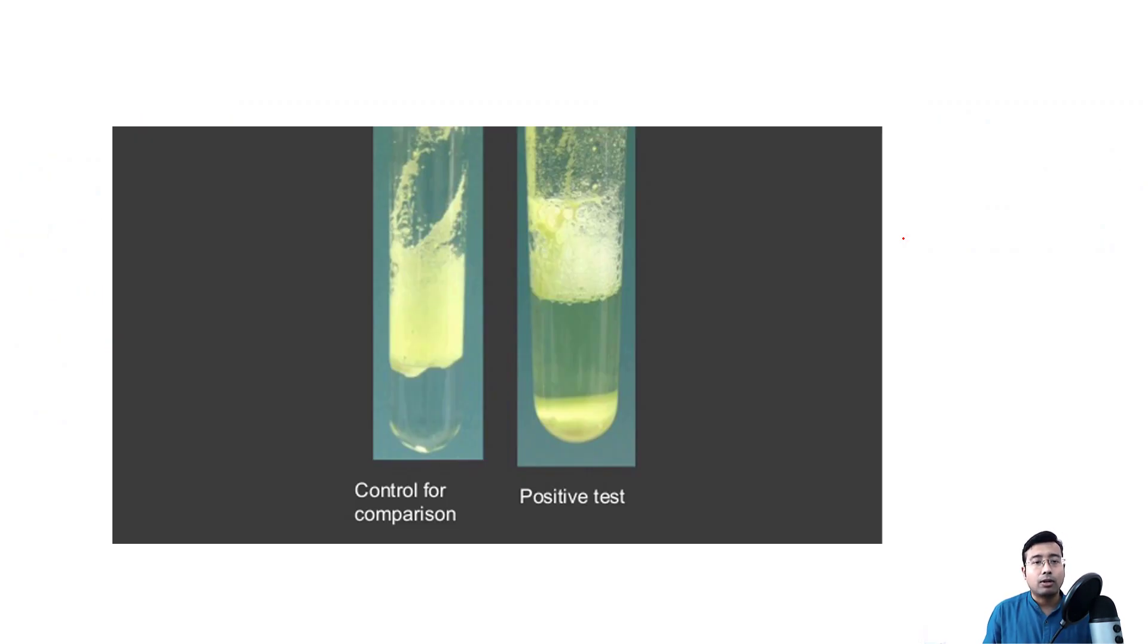This is how it will look like. In case of the control tube, the sulphur powder will float on the surface. And in case of the sample tube, if the test is positive, sulphur powder will simply sink to the bottom.